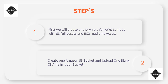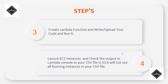Then after that, we will create one S3 bucket and upload a blank CSV file, because our Lambda function will write the list of running EC2 instances in that CSV file. The third step is to create a Lambda function and write and upload your code and run it. I already made one code for this demo, so I will paste it into the Lambda function. If you want that code, you can take it from my GitHub repository — I will give the link in the description box.